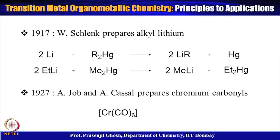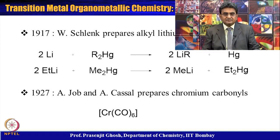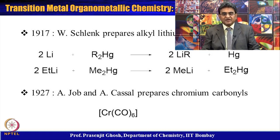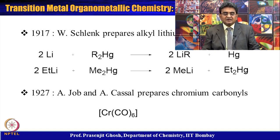In 1917, W. Schlenk prepared alkyl lithium using transmetallation reactions involving mercury alkyls: lithium with dialkyl mercury gives lithium alkyl and mercury, and ethyl lithium with dimethyl mercury gives methyl lithium and diethyl mercury — a ligand exchange reaction. Methyl lithium compounds are extremely difficult to handle as they are pyrophoric — when exposed to air they instantaneously start burning — but they are extremely good alkylating reagents and play a crucial role in organic synthesis.